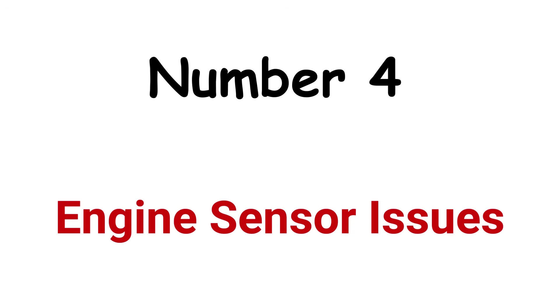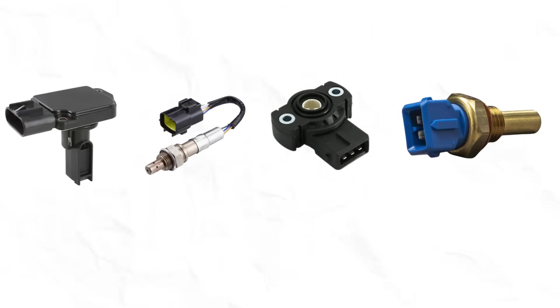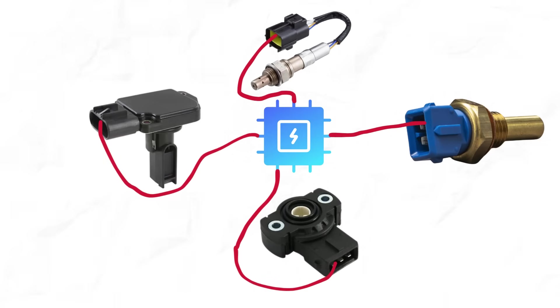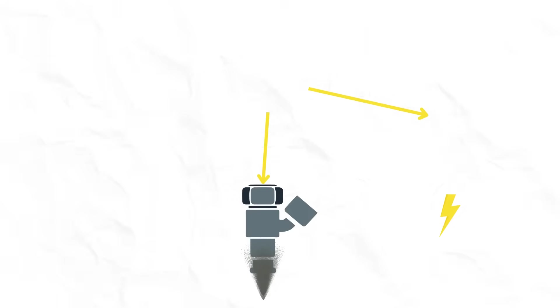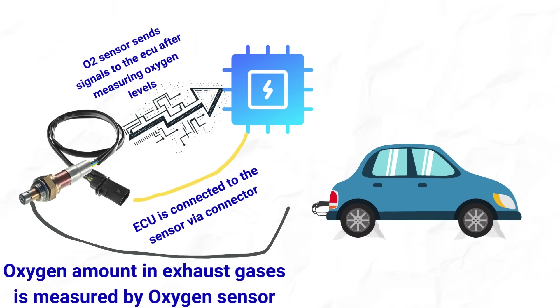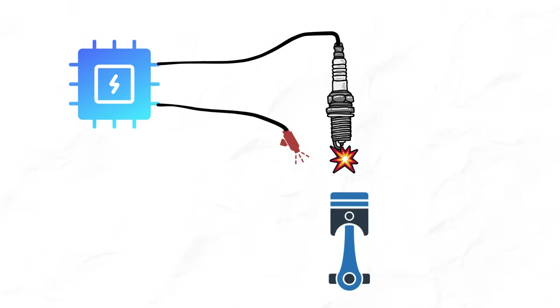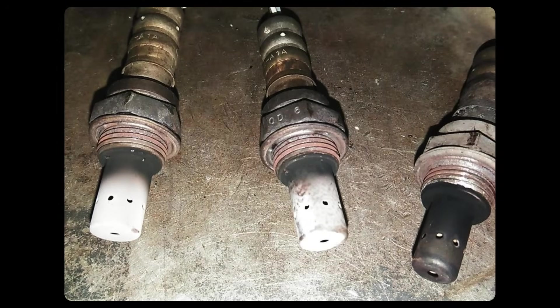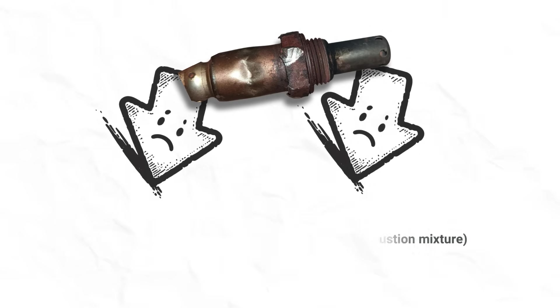Cause #4: Engine sensor issues. The engine has different sensors — including the mass airflow sensor, oxygen sensor, throttle position sensor, and engine coolant temperature sensor — which send signals to the ECU. From these signals, the ECU determines spark timing and the actual fuel to be injected. The oxygen sensor monitors oxygen in exhaust gases and provides feedback to fine-tune the air-fuel mixture. If an O2 sensor malfunctions, it can cause the engine to run lean or rich, resulting in erratic RPM behavior.